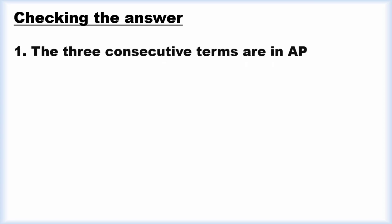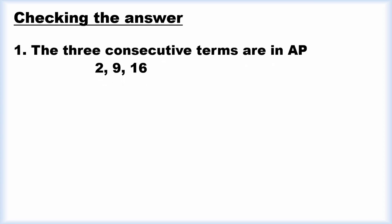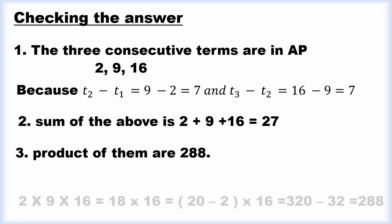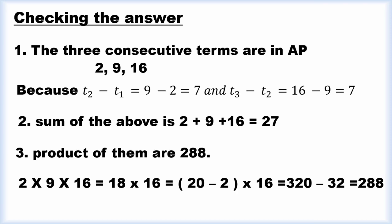Now checking the answer. Three consecutive terms in AP are 2, 9, and 16. Here 9 minus 2 equals 7, and 16 minus 9 equals 7. Therefore the common difference is 7, confirming that 2, 9, 16 are in AP. Also, 2 plus 9 plus 16 equals 27, proving the sum condition. The product is also proved to be 288. This will help students to solve the problem individually.